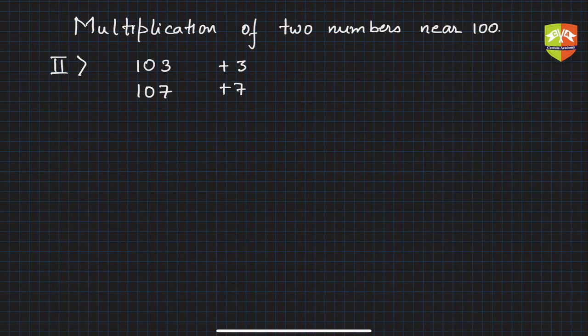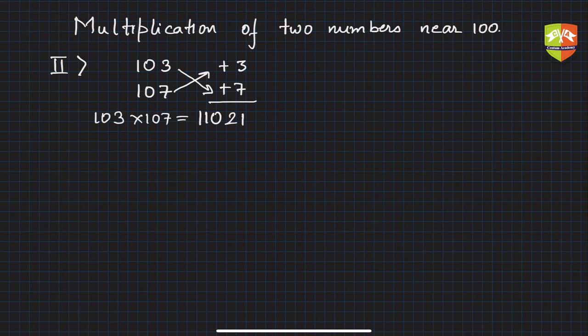The process is the same. Now you multiply plus 3 to plus 7, which is 21. Do either of these operations: 103 plus 7 or 107 plus 3. In both cases you get 110, so simply write 110. The product of 103 and 107 is 11021.